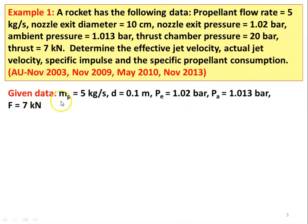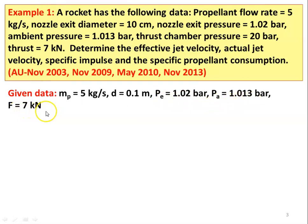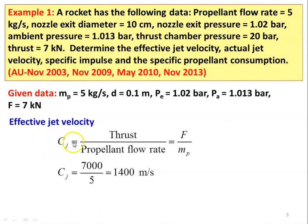Writing down the given data: mass of propellant MP = 5 kg/s, diameter of nozzle D = 0.1 meter, exit pressure Pe = 1.02 bar, atmospheric pressure Pa = 1.013 bar, thrust produced F = 7 kilo Newton. The effective jet velocity Cj = thrust divided by propellant flow rate = F / MP = 7000 / 5 = 1400 meters per second.